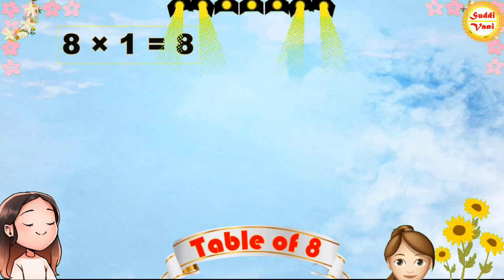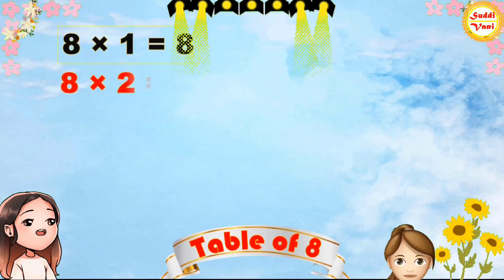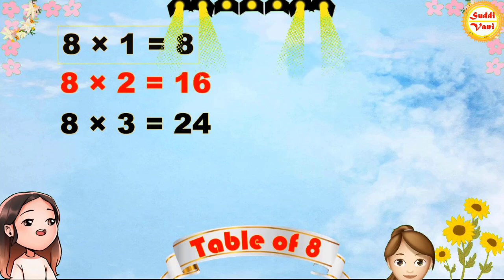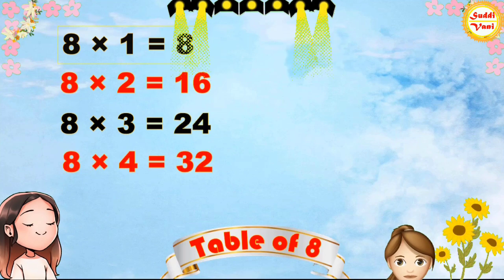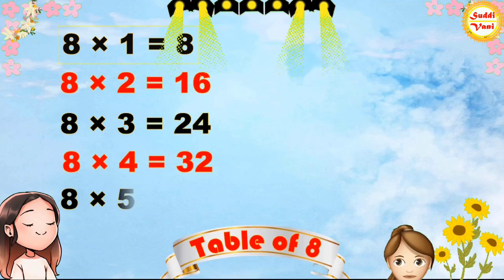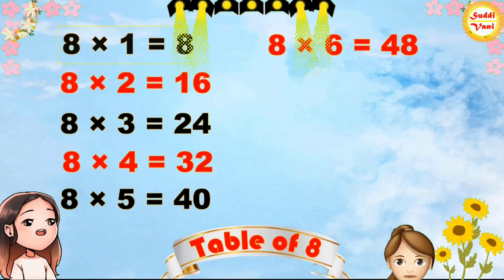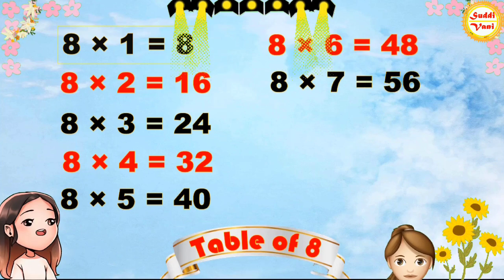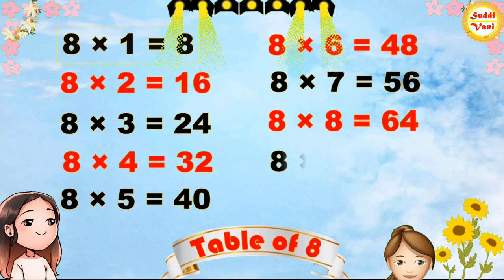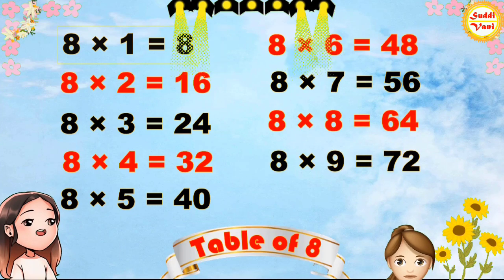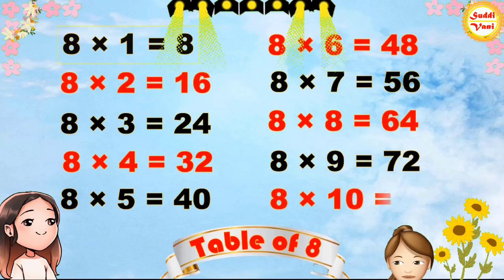8×1=8, 8×2=16, 8×3=24, 8×4=32, 8×5=40, 8×6=48, 8×7=56, 8×8=64, 8×9=72, 8×10=80.